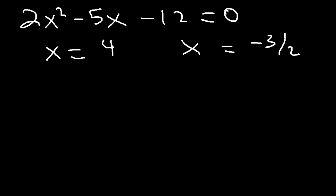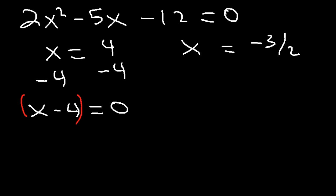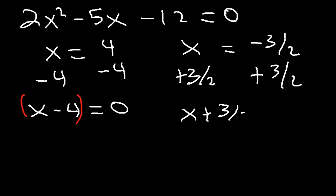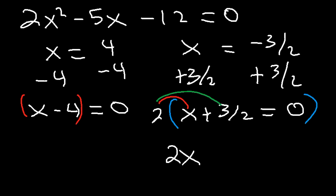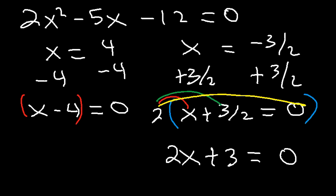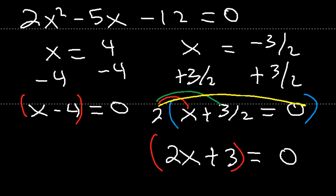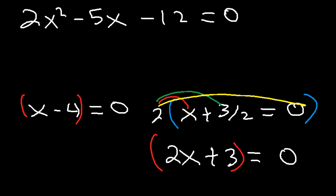We need to get a 0 on one side of the equation. Let's subtract 4 from both sides, so x minus 4 equals 0. For the next one, let's add 3 over 2 to both sides, so x plus 3 over 2 equals 0. Since we have a fraction, multiply both sides by 2 to get rid of it: 2 times x is 2x, and 2 times 3 over 2 — the 2's cancel — gives 3. So 2x plus 3 equals 0. Therefore, to factor 2x squared minus 5x minus 12, it's going to be (2x plus 3) times (x minus 4).